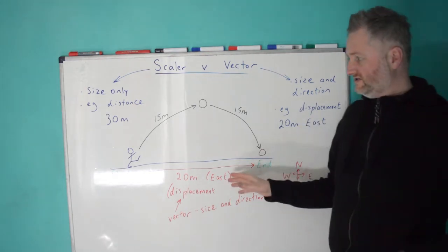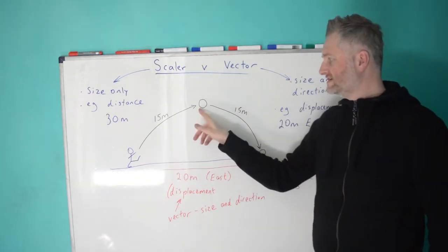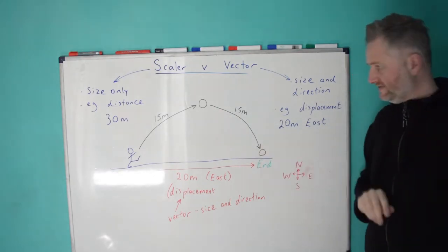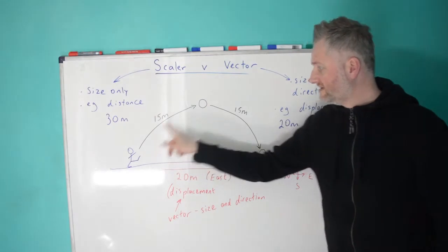So, when I went to the beach, I kicked the ball into the air. The ball travelled 15 metres up and then it came 15 metres back down again. So, what we'd say is the total distance would be 30 metres.